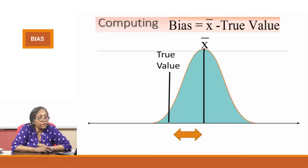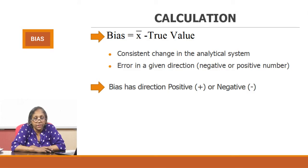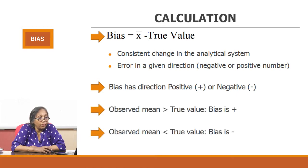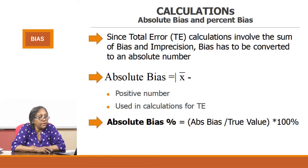Suppose this is the true value and this is your mean — this will be your bias. You need to have a mechanism to quantify it. Bias is equal to your mean value minus the true value. This indicates the change in the analytical system. When you calculate x-bar minus true value, error will have a direction — either negative or positive. If the observed mean is more than the true value, the bias is positive; if less, the bias is negative.